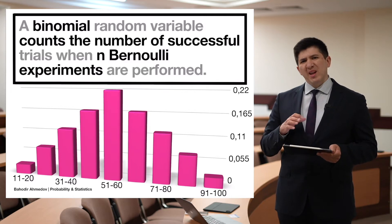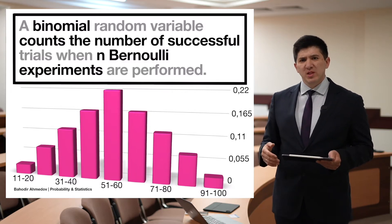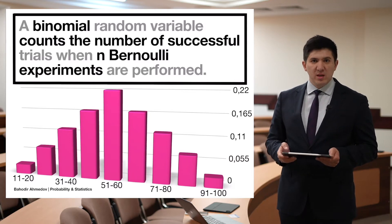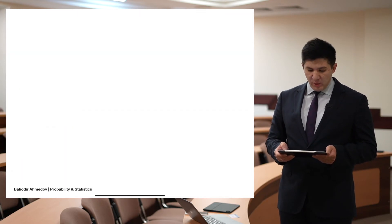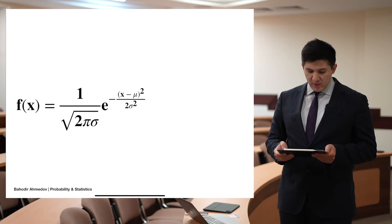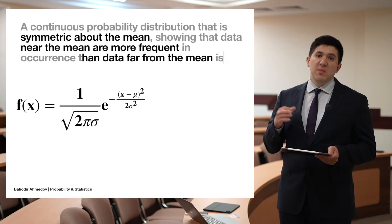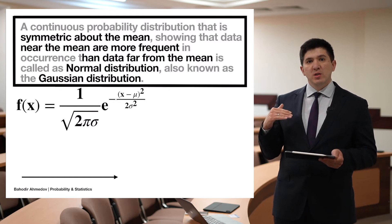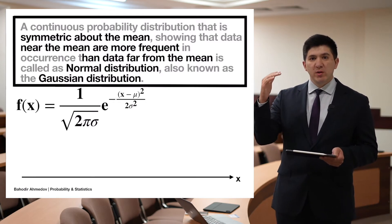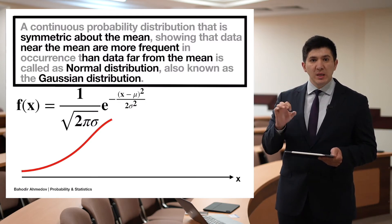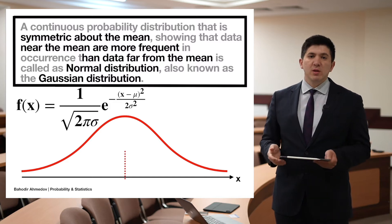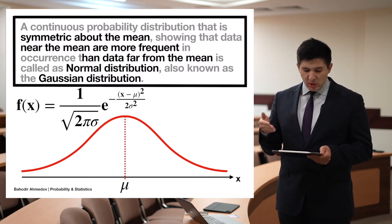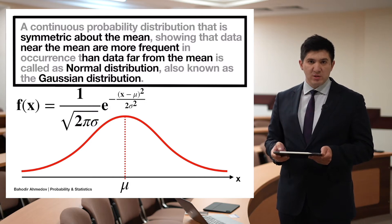The binomial distribution has a complicated formula, and most of the time if n is large it is difficult to make the calculations. The normal distribution is a symmetric curve around the mean — more probable near the mean and less probable far away — given by a specific function.